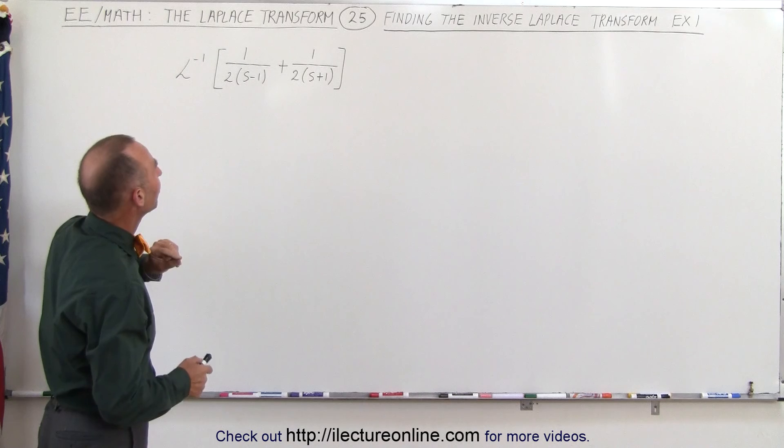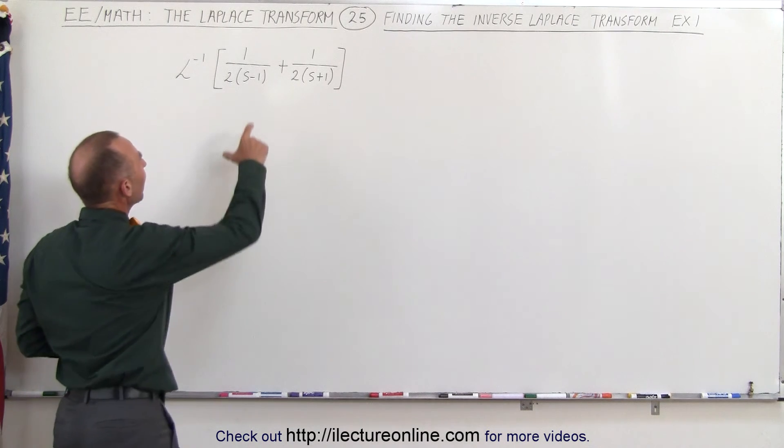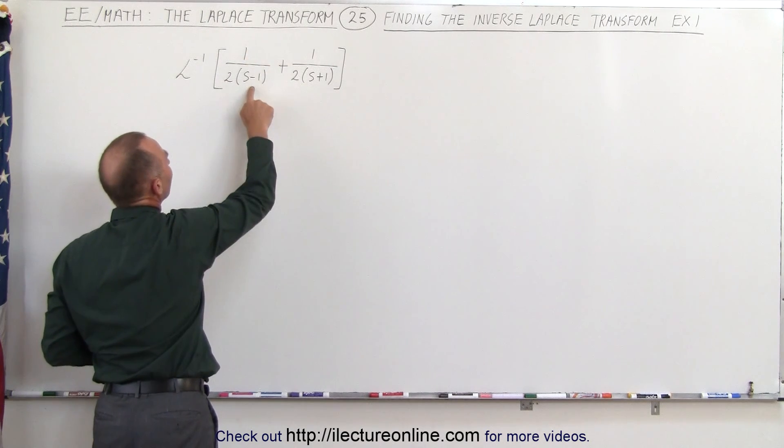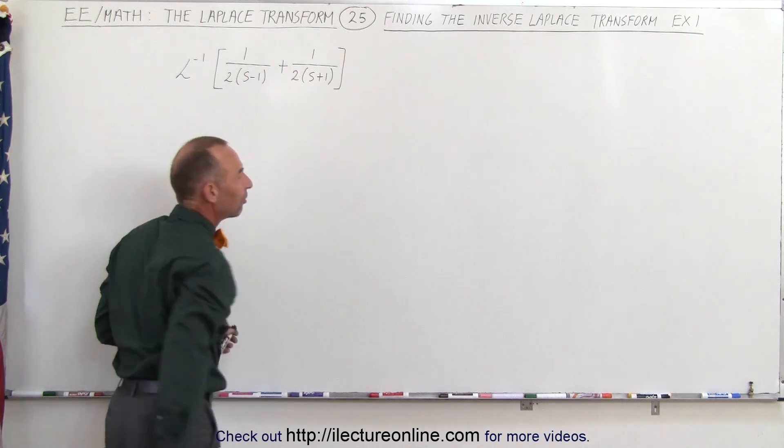So when we look at something like this, first of all you realize that we have 1 half times 1 over s minus 1 plus 1 half times 1 over s plus 1.